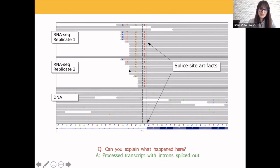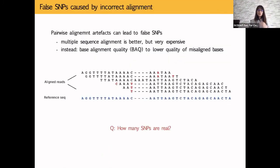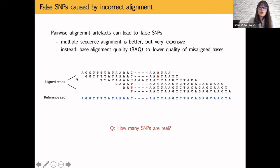To minimize splice site artifacts when working with RNA-seq data, use a splice-aware alignment algorithm that knows introns exist and tries to minimize these errors. However, some will still occur because the program must choose between aligning a few bases locally or finding their correct location far away, and local alignment is computationally cheaper.